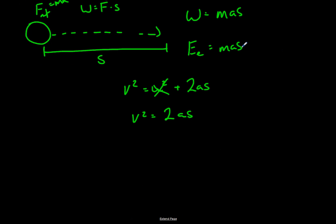Now remember, keep this in mind. Quickly rearrange this formula. Okay, multiply both sides by a half, so we get one half V squared being equal to A times S.